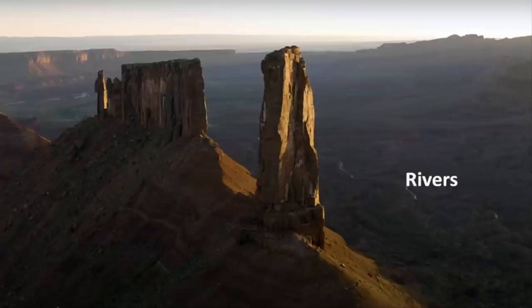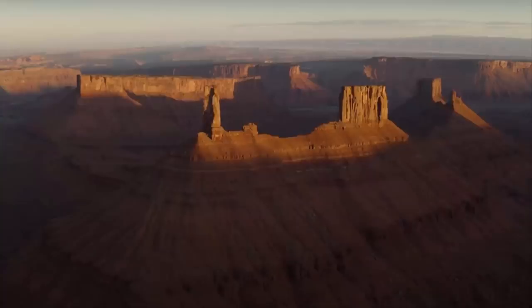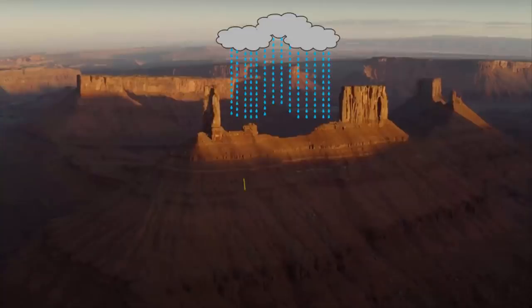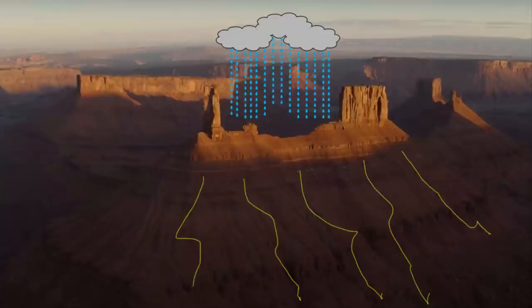At first, continuous flow of river streams and wind activity cuts a plateau horizontally at ground level. After that, continuous heavy rainfall erodes certain sections of a plateau vertically and turns them into a butte.